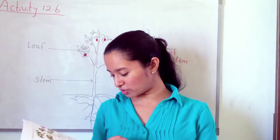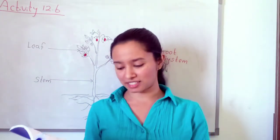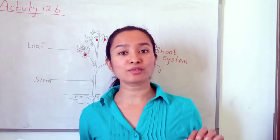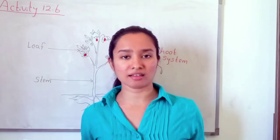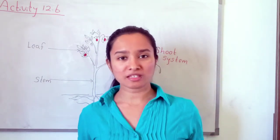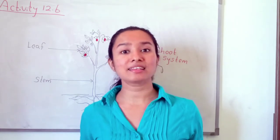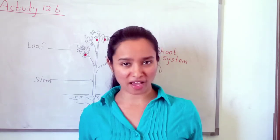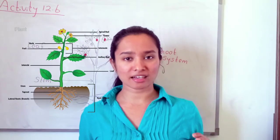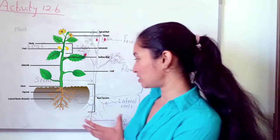Assignment 12.2 is on page number 17. Here, you have to take a grass plant, observe what systems are present, then draw a line diagram of the grass plant and name the systems and organs.